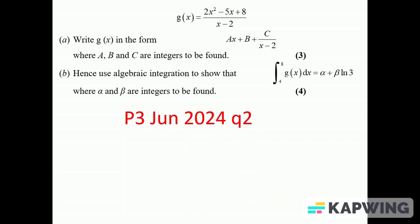Right, here's an integration question, June 2024 P3 paper, question two on the paper. It's a pretty basic one, a good place to start I think. Right, got g(x) is that fraction 2x² - 5x + 8 over x - 2. We've got to write in that form.